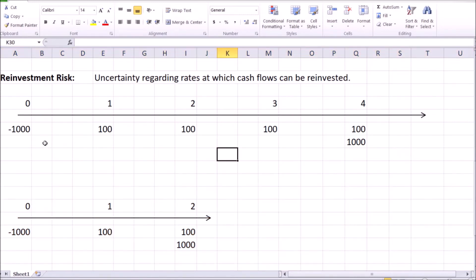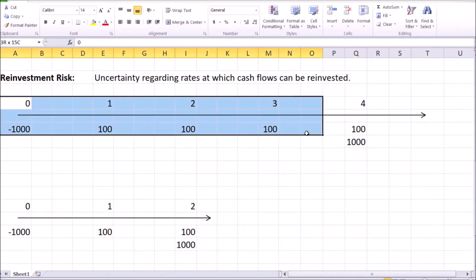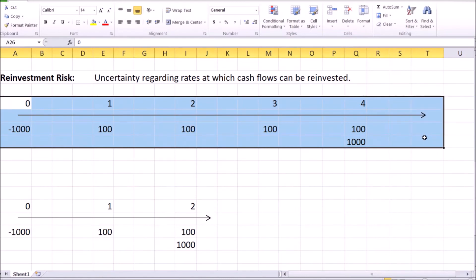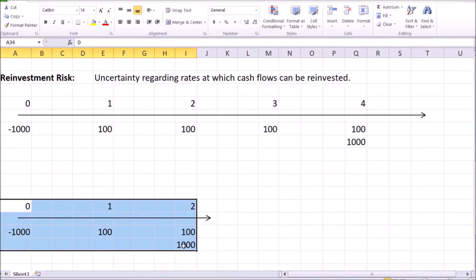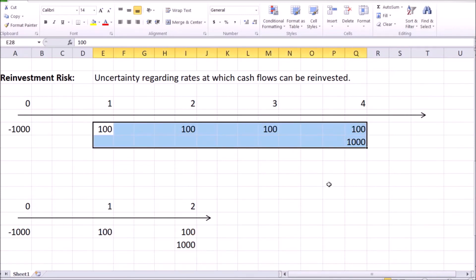Now imagine that instead of being lucky enough to buy an attractive four-year bond which pays a very comfortable 10% yield to maturity per year, I only managed to buy a two-year bond. In this case, I will receive the face value and all of the coupon payments of the bond—I will receive all of the future cash flows promised by the bond—sooner. I will receive them within two years rather than within four years.